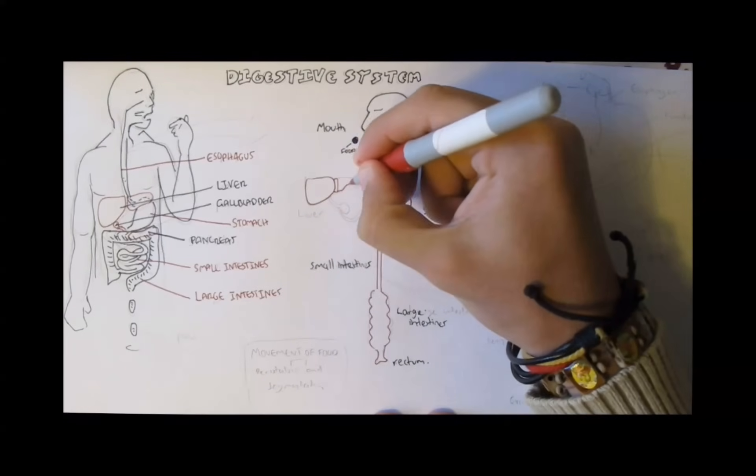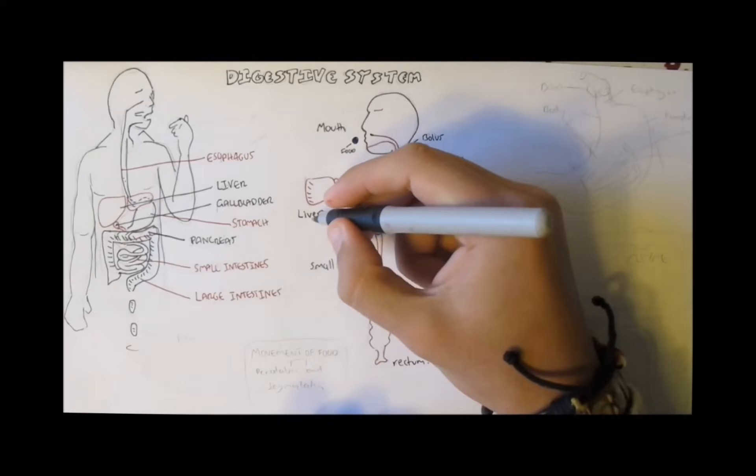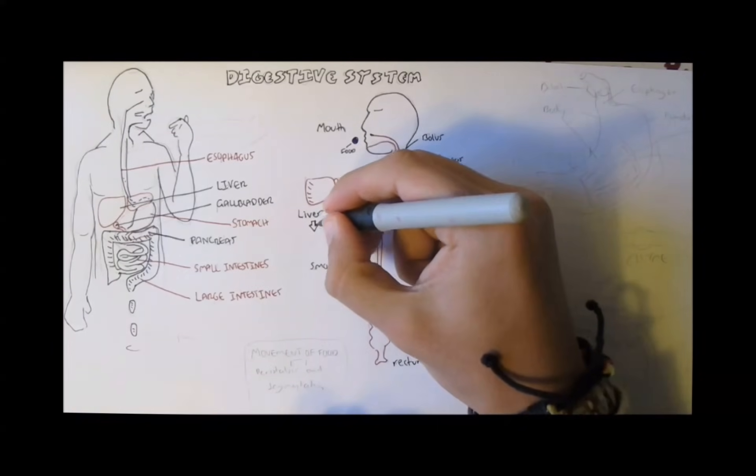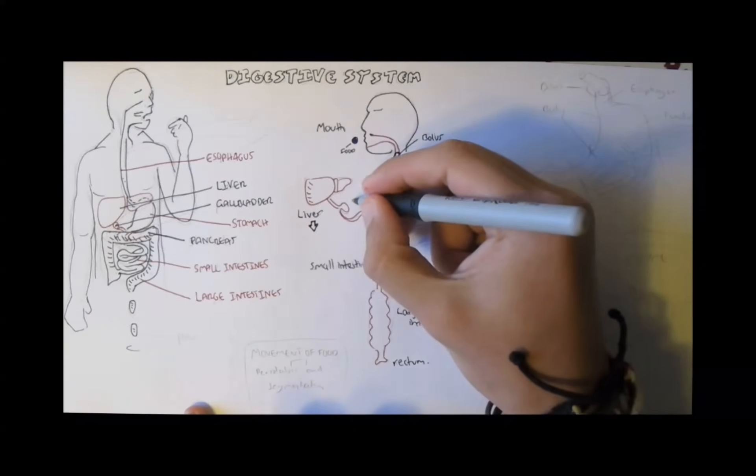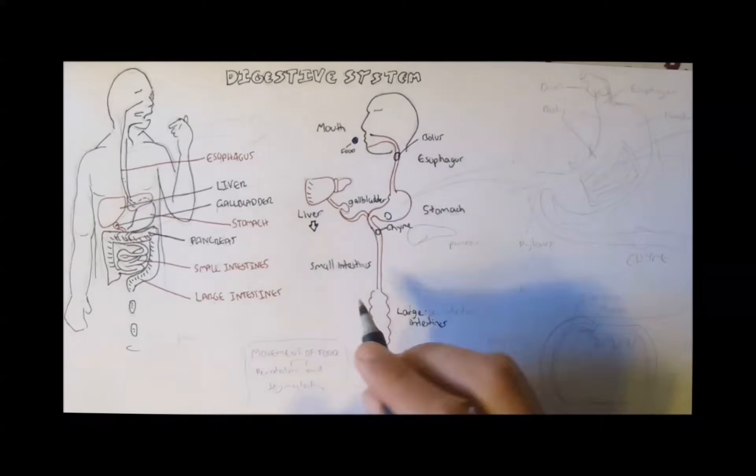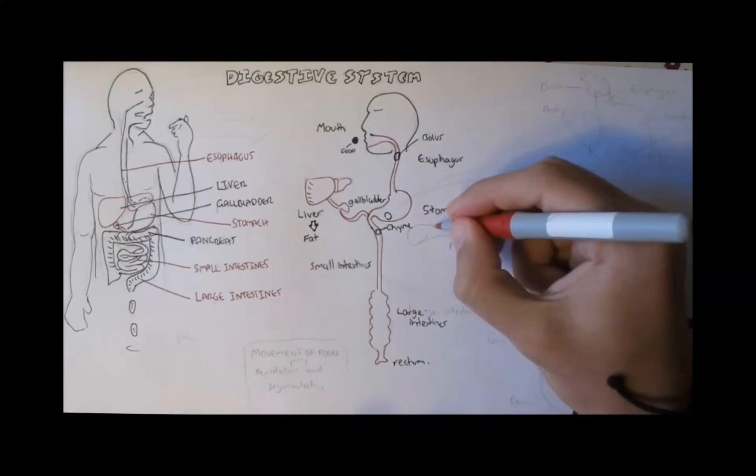Then we have those secondary organs associated with the gastrointestinal tract. The liver is superior to the right of the stomach, just under the diaphragm, your lungs. It produces and secretes bile, important for fat digestion. The gallbladder stores bile from the liver, ready to secrete it at notice.